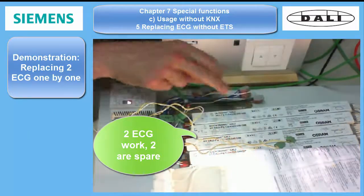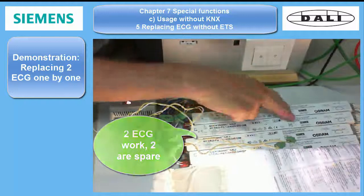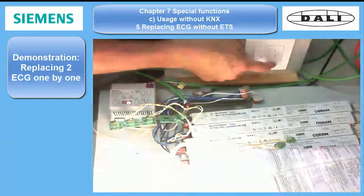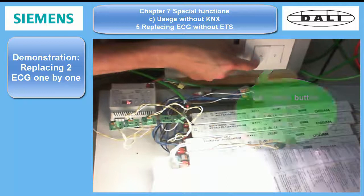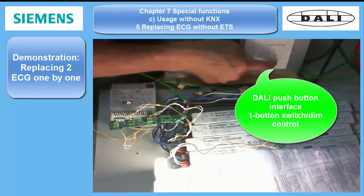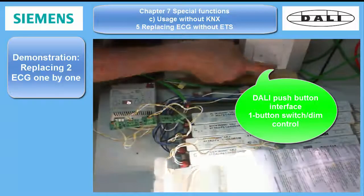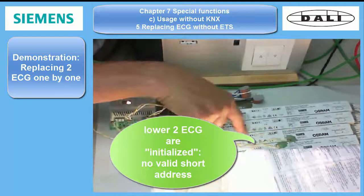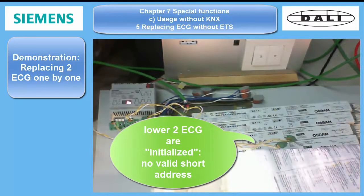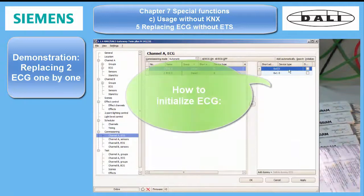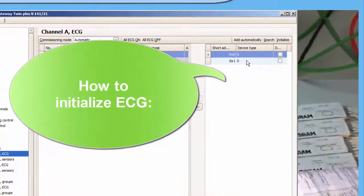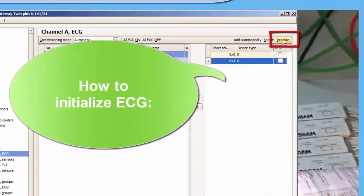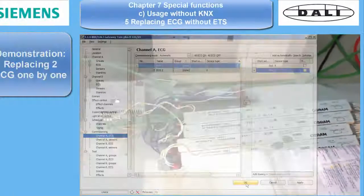I am starting with a configuration of two groups respectively ECG. On this board I have four ECG. The upper two of them are paired with the lower two push buttons on the panel. The buttons work as a one-button dimmer function. The lower two ECG are initialized, meaning they don't have a valid short address. This condition can be achieved in the commissioning dialog of the DALI Gateway after a bus ECG scan. The ECG must be selected and the button Initialize be pressed.